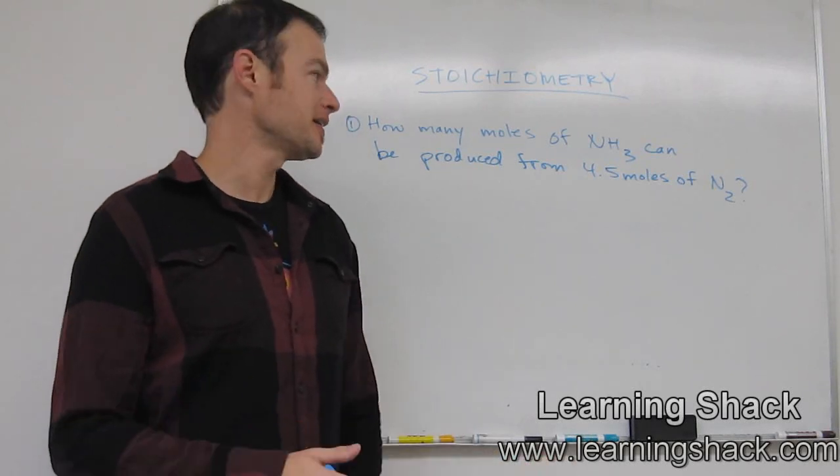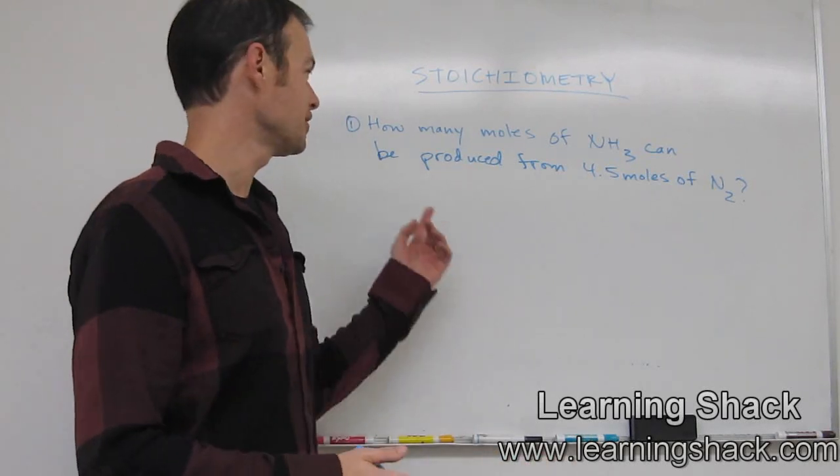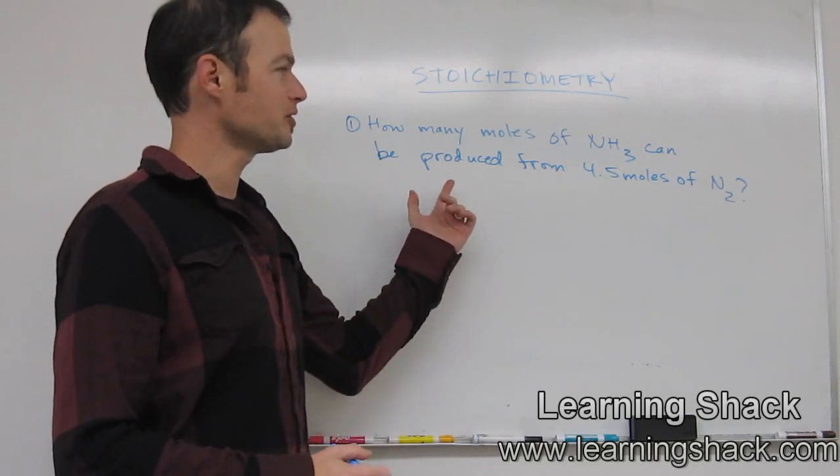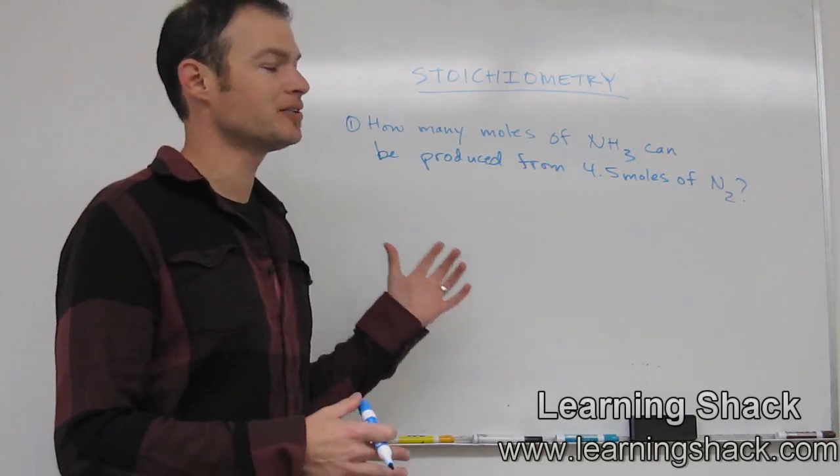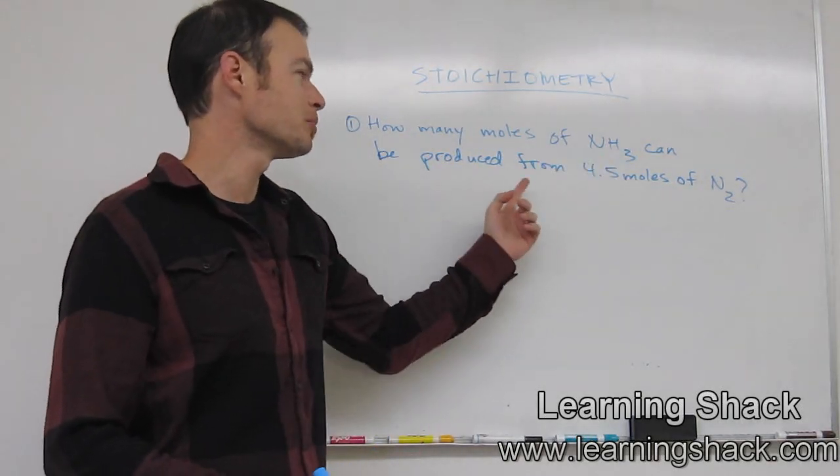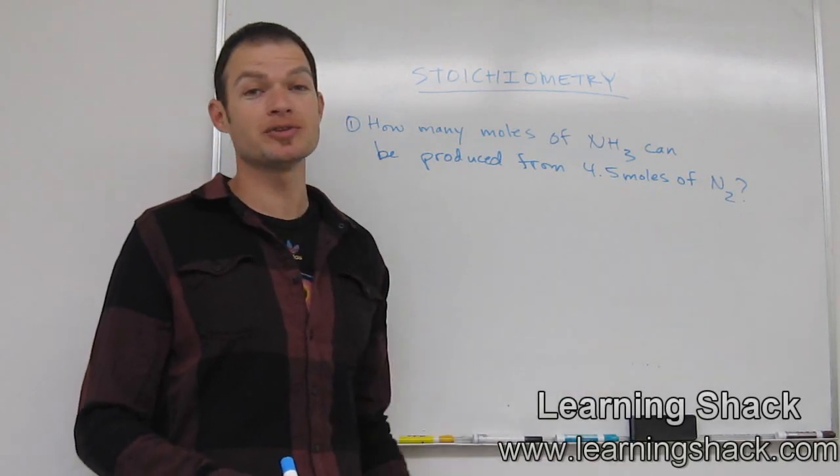Some of you who have had high school chemistry probably have seen equations like this before. Basically, this is an equation that's asking you to figure out how to relate chemistry and math. It says here how many moles of NH3 can be produced from 4.5 moles of N2.